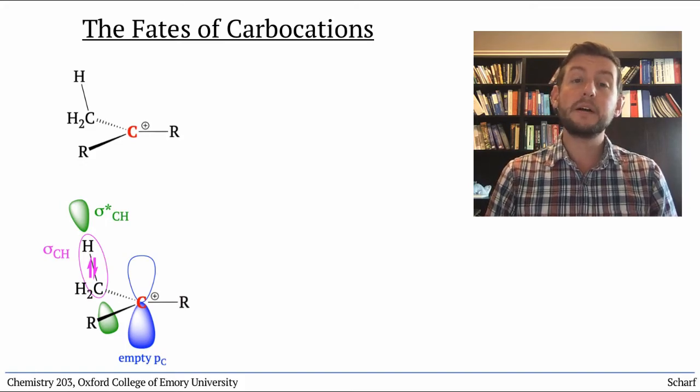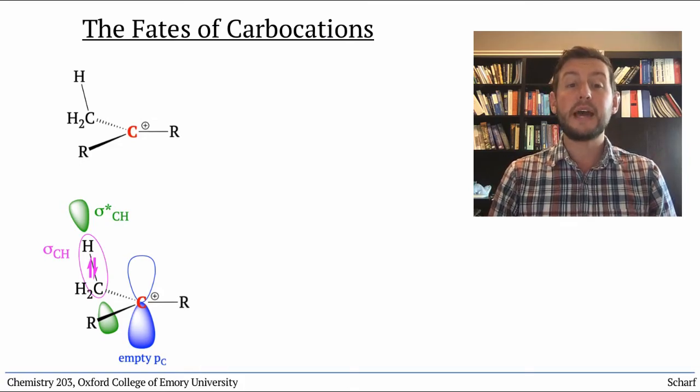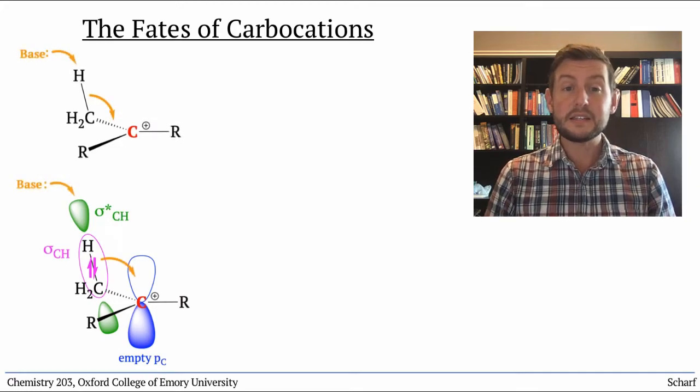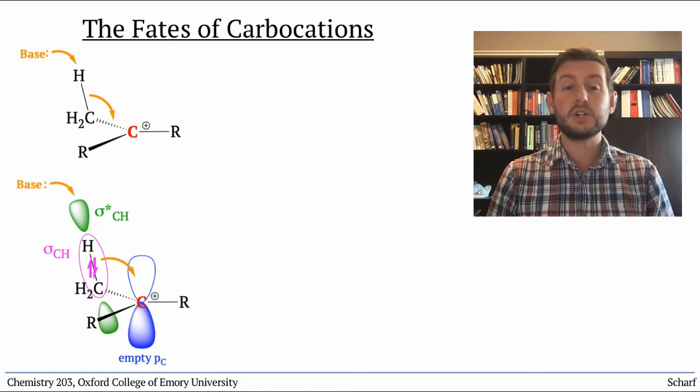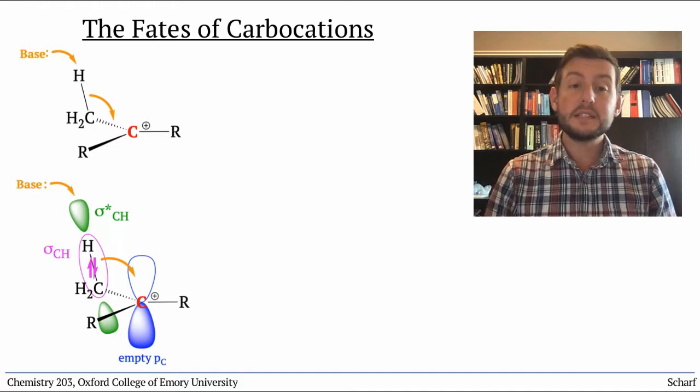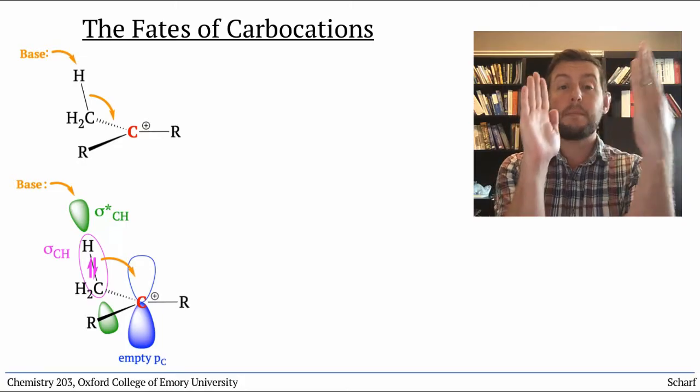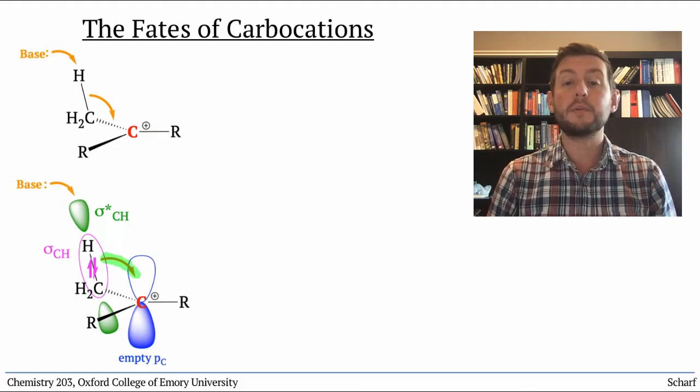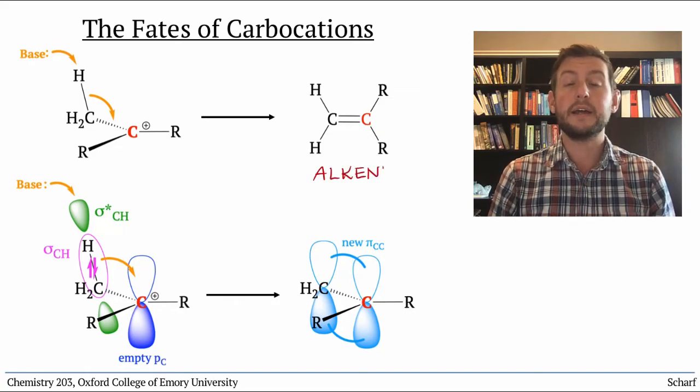This makes the corresponding sigma star orbitals slightly better acceptors than they would otherwise be. If these sigma bonds are C-H bonds, that makes them susceptible to attack by bases. If a base donates into this sigma star C-H while the bond is in hyperconjugation with the adjacent p orbital, the sigma bond breaks, and the sigma bonding electrons are already poised and ready to make a pi bond to the adjacent carbon by sharing with that empty p orbital that they're aligned with. The result is a new pi bond, an alkene.